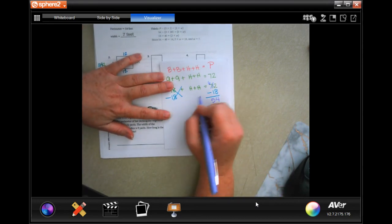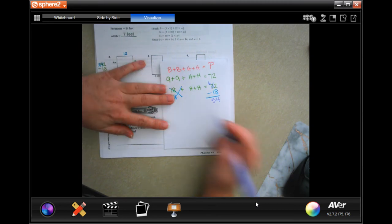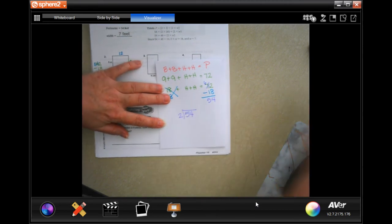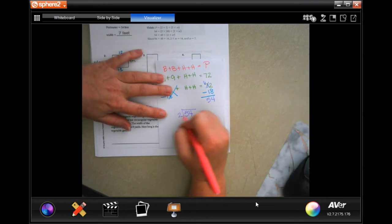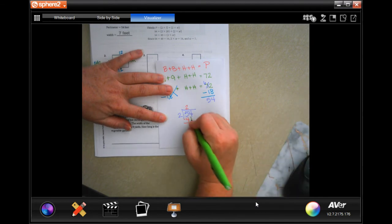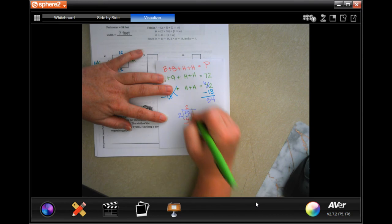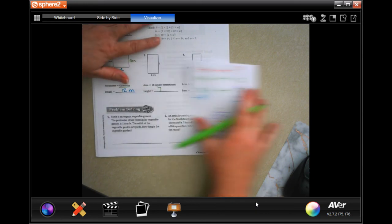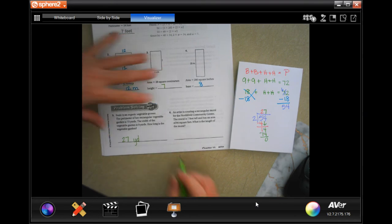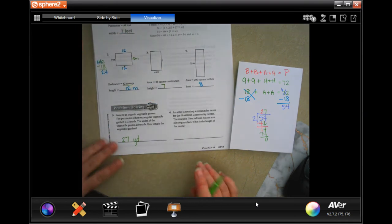But there's two of them, and I have to split it up. So I'm going to do 54, and I'm going to divide that by two. So two goes into five, two times, two times two is four, subtract, get one. One is smaller than two, so I'm going to bring down my four. Two goes into 14, seven times, seven times two is 14, subtract, get zero. So each side is 27. 27 yards.